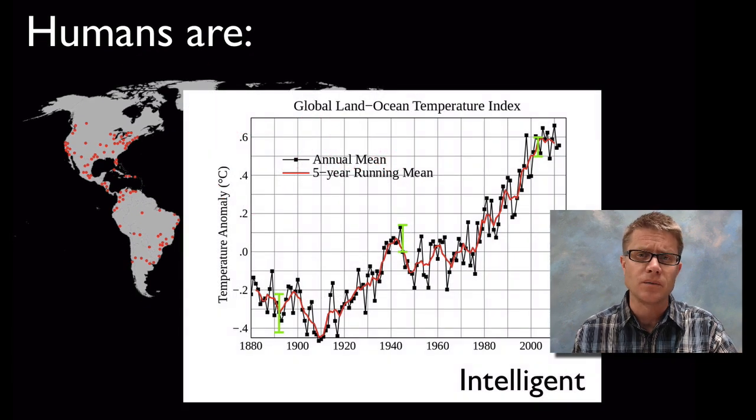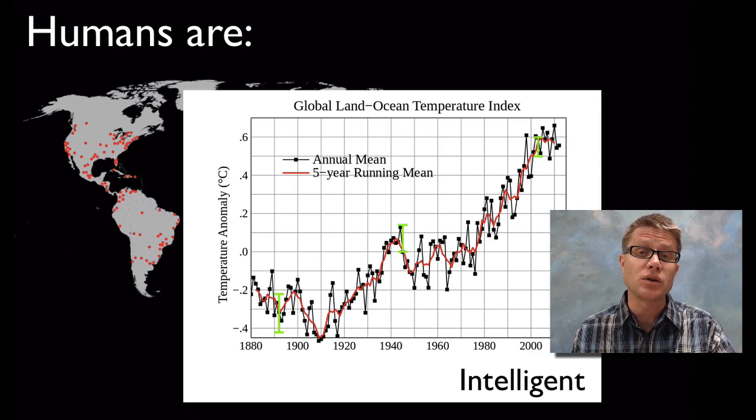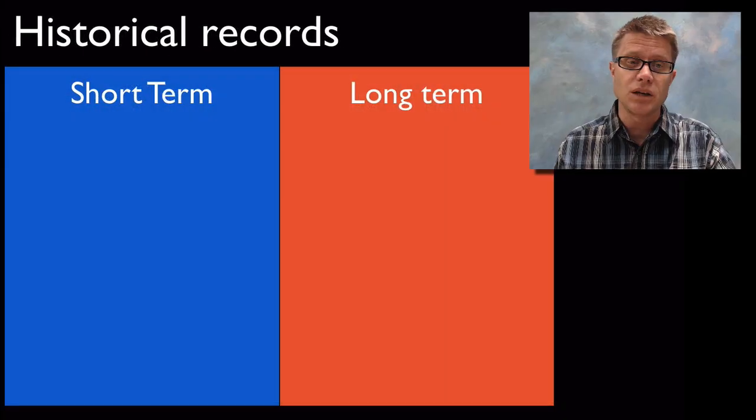But we're also incredibly intelligent. We can build these complex models that look at the climate and how the climate changes over time. We can make predictions about what's going to happen in the future, and we can change our behavior based on that.